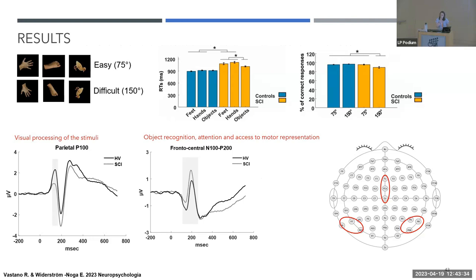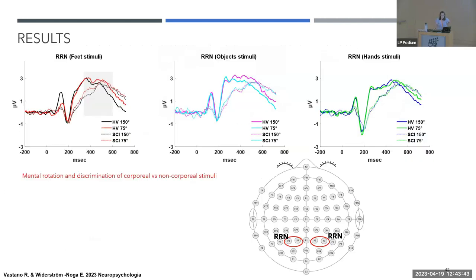These findings could generalize to other chronic pain conditions. There is evidence that these EEG components follow a similar pattern in amputees with phantom pain, and potentially also in complex regional pain syndrome.